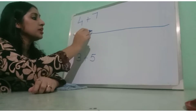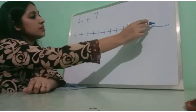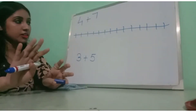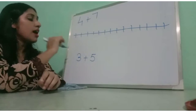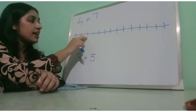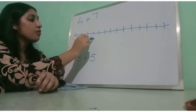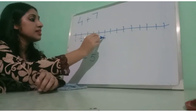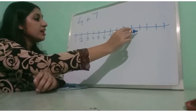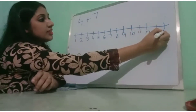I am drawing marks on the line: 1, 2, 3, 4, 5, 6, 7, 8, 9, 10, 11, 12, 13, 14. You can draw as many lines as you need. Now I am writing the numbers below each line: 1, 2, 3, 4, 5, 6, 7, 8, 9, 10, 11, 12, 13, 14.